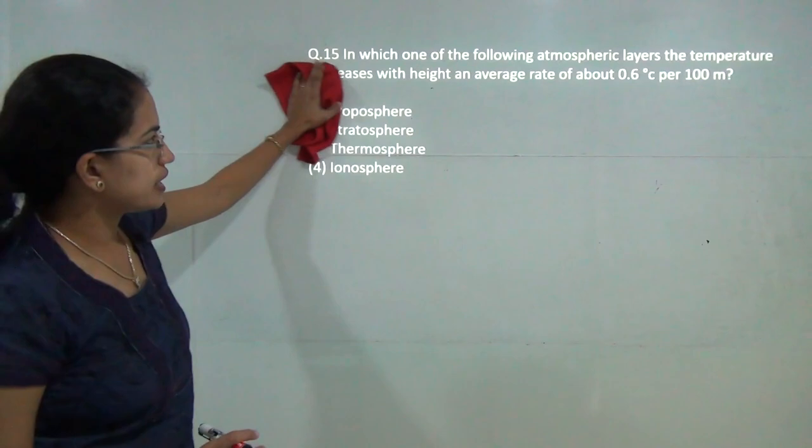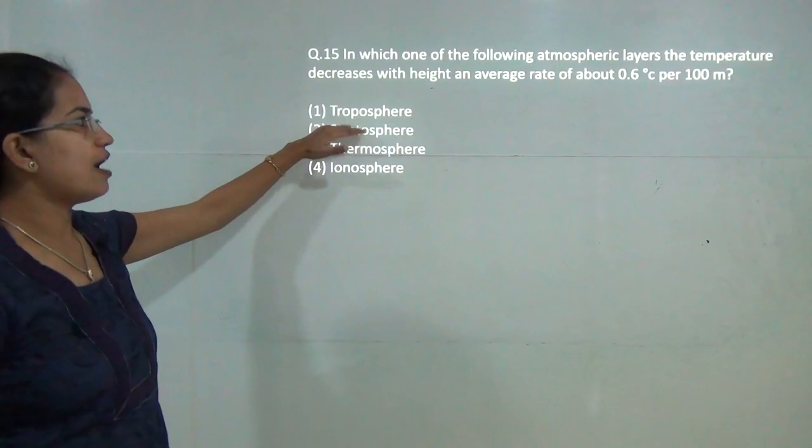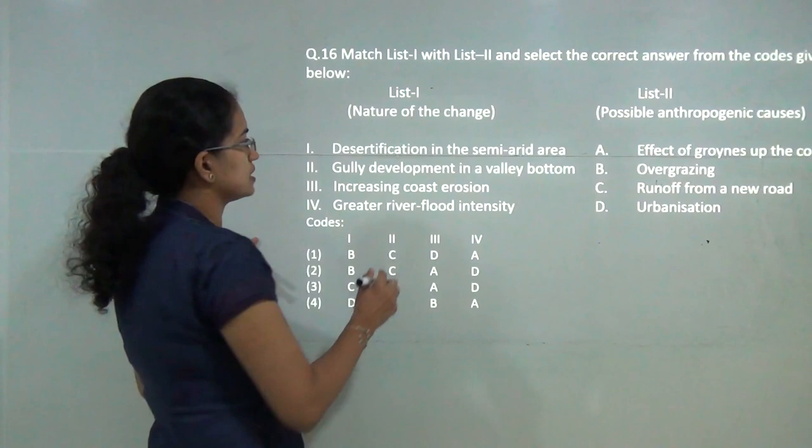Next is there is a rate of fall of 0.6 degrees per 100 meters in which of the following layers. Troposphere is the correct layer where you have the temperature that falls at a rate of 0.6 degrees Celsius per 100 meters rise in the height.